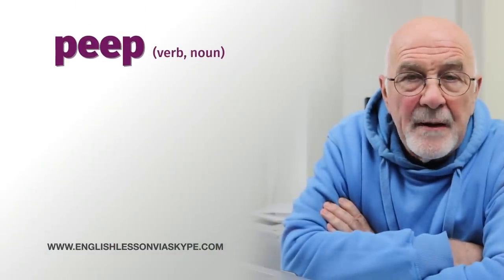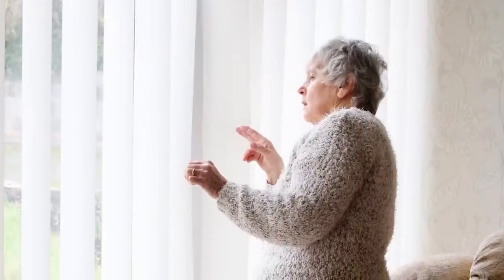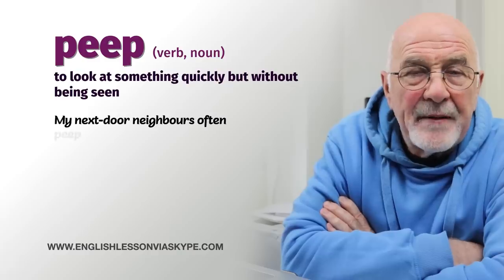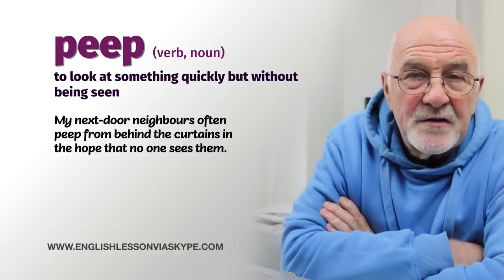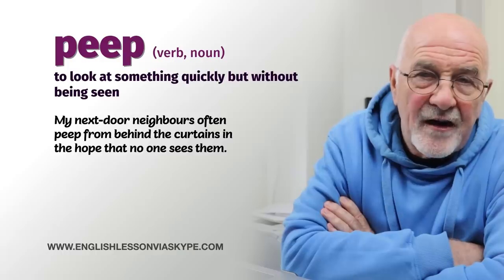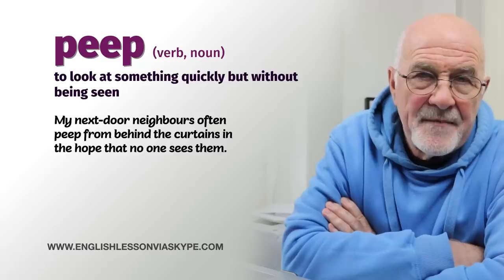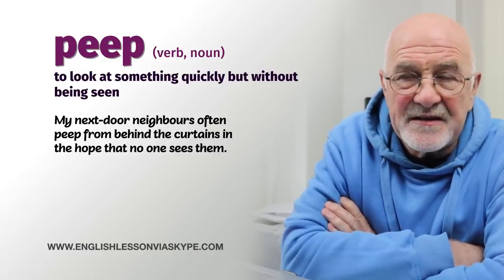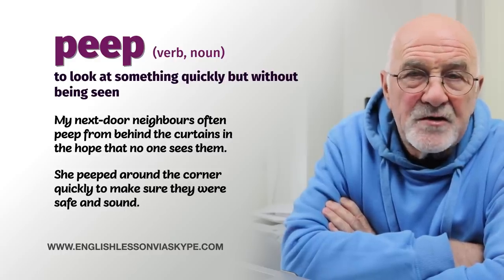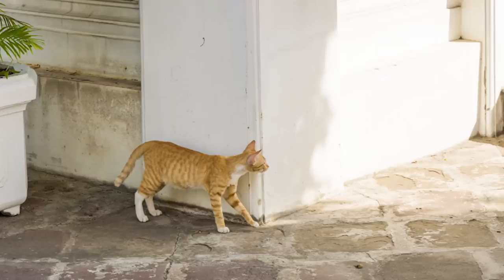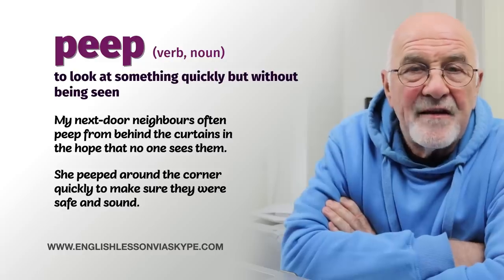Peep. To peep at something quickly, but without being seen. We often have the situation where neighbours like to know what's happening — particularly older neighbours. So they peep out of the window or from behind the curtains, hoping nobody will see them. But if you're very quick, you'll see the curtains moving and you can see them trying to watch what you're doing. So peep is a secretive way to look at something. If you're looking out for the kids, you might peep around the corner quickly to make sure they're safe and sound.